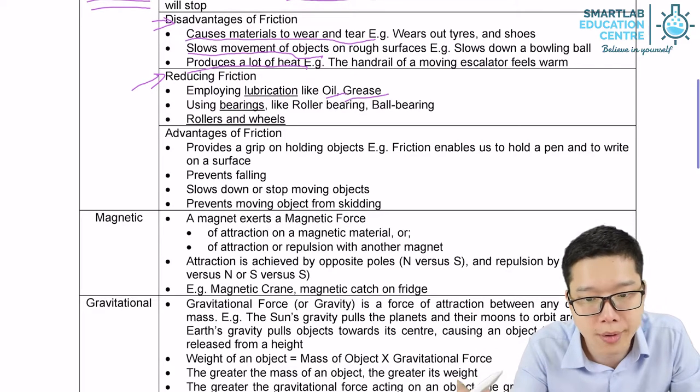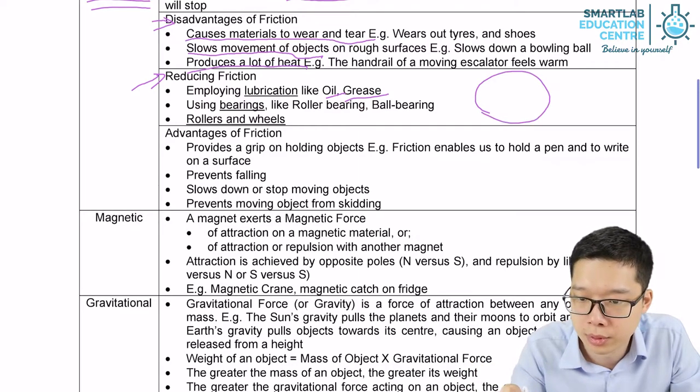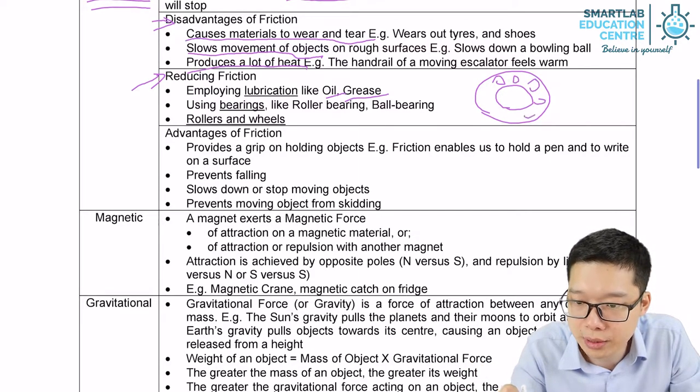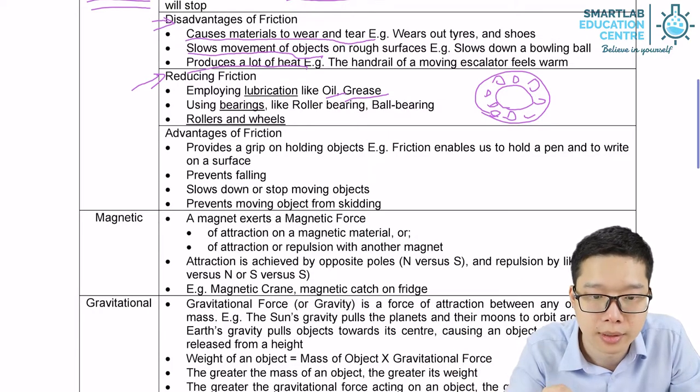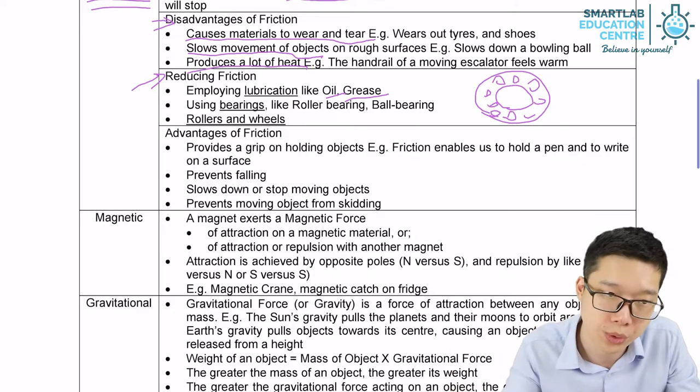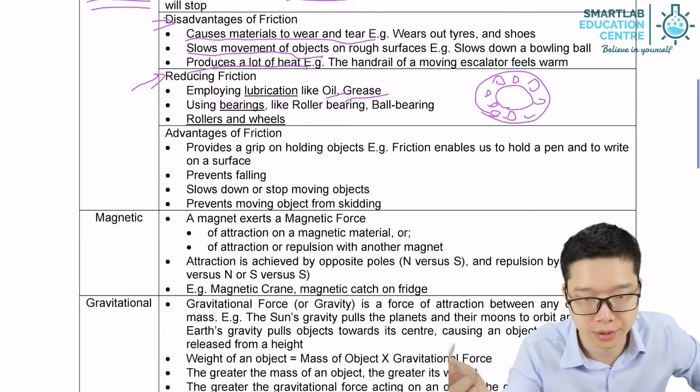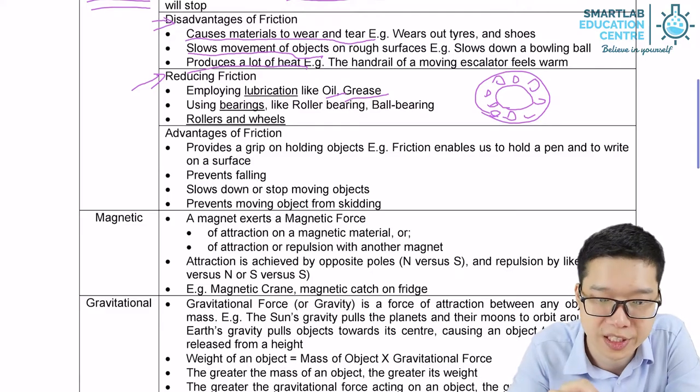We can use ball bearings. Instead of rubbing, we use balls to rotate. And yes, we can use roller wheels. Instead of rubbing on the ground, we can rotate on the ground. We can reduce friction.